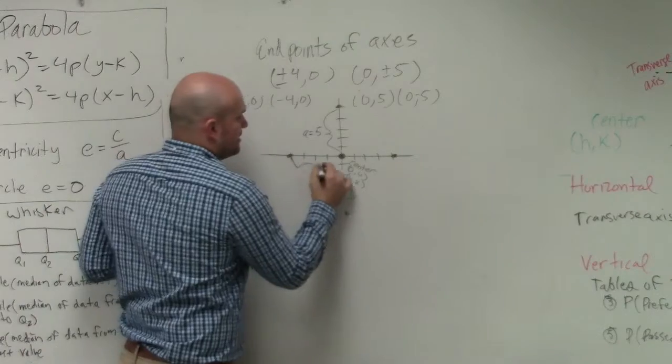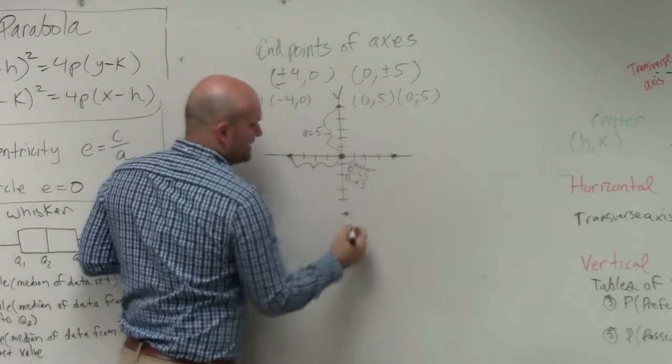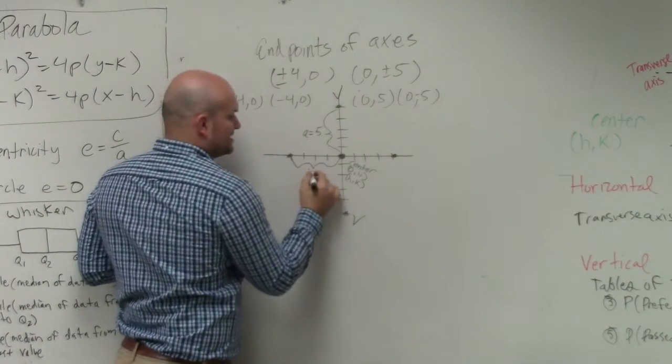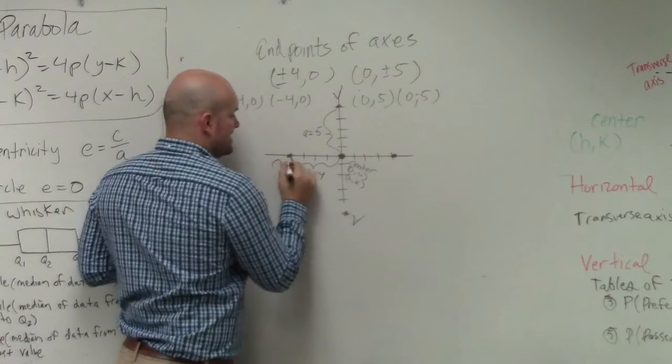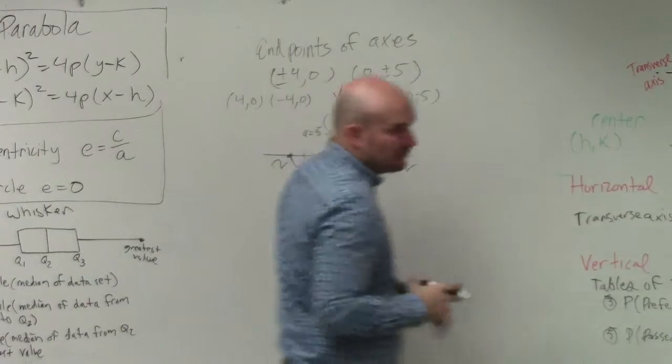And then this distance, so that's my vertice, and that's a vertice. This length is b, which is 4. That means that's a co-vertice, and that's a co-vertice.